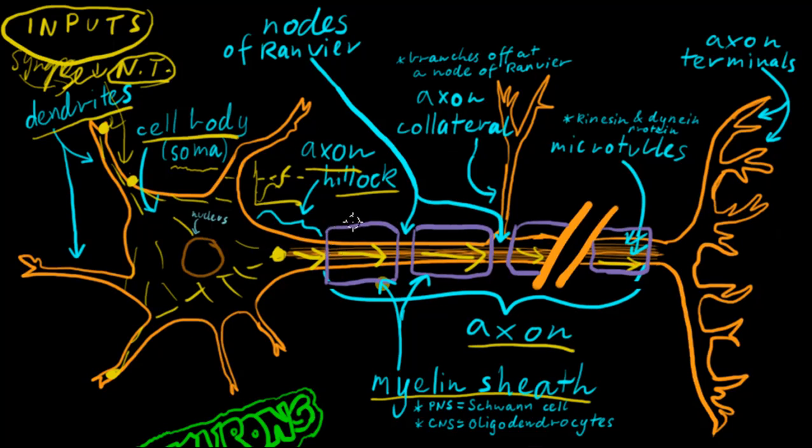Its main function is so that the action potential, this electrical current, can be propagated faster during this point, faster during that point, and faster during every other point that has been myelinated. These bits here, these gaps, are called the nodes of Ranvier.